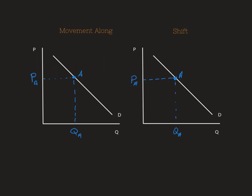Let's start by talking about a movement along. A movement along means that there is a change in price, a change in something that's already modeled in this function, which is shown on one of the axes. So for example, price could decline to price point B. And there's no change to the actual function.